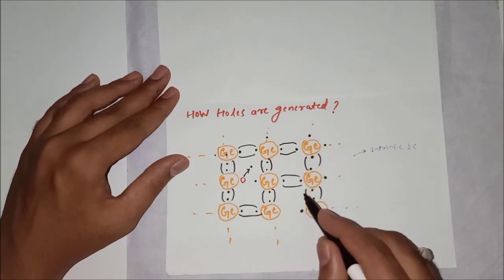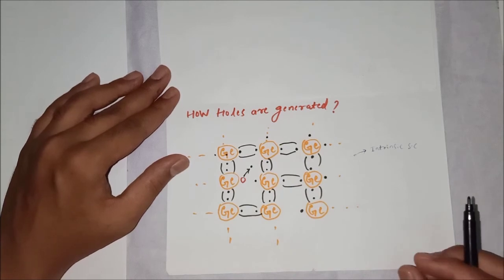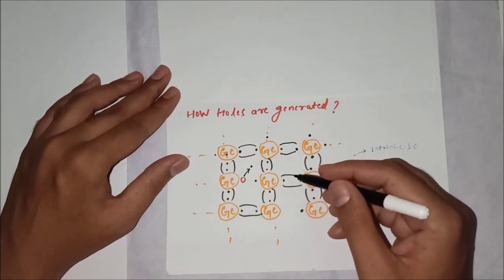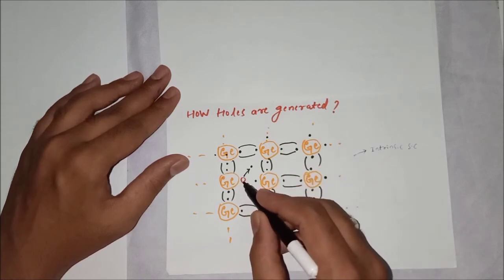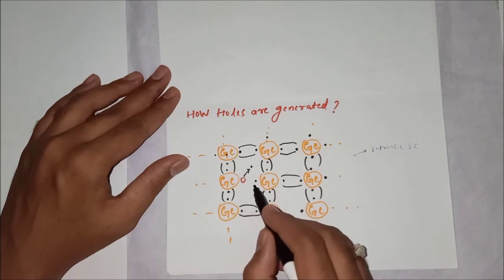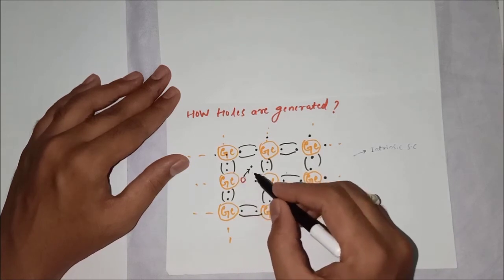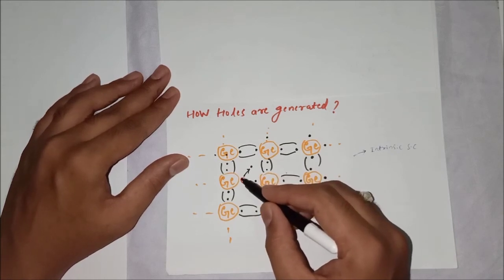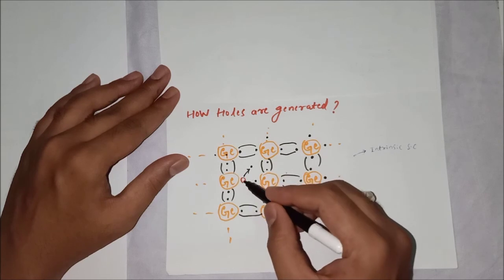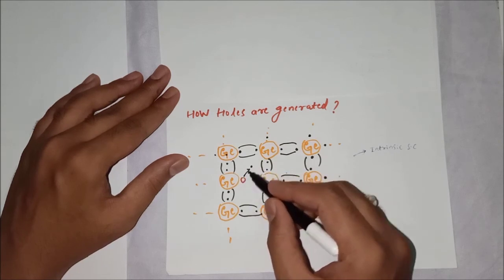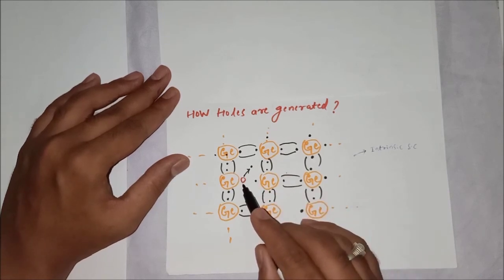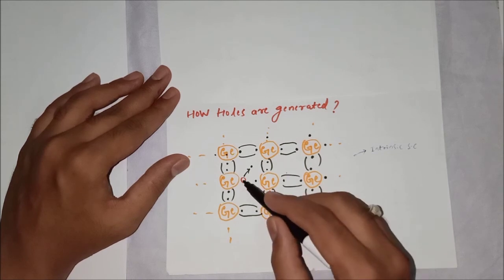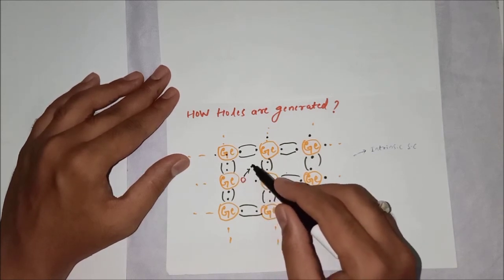When heat energy is supplied to the intrinsic semiconductor, the electrons start to vibrate and the covalent bond breaks. After the bond breaks, the electron becomes free and moves away, leaving behind a vacancy. This vacancy is called a hole. The hole carries a positive charge because positive charge is simply the absence of a negative charge — the electron is no longer there.